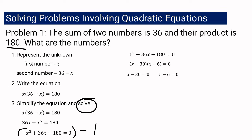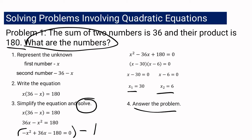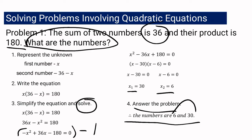Using the zero product property, we equate each factor to zero and apply the addition property of equality. x sub 1 is 30 and x sub 2 is 6. To answer the problem, the two numbers are 6 and 30. Checking: 30 plus 6 equals 36 (the sum), and 6 times 30 equals 180 (the product). Therefore, our answer is correct.